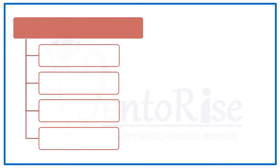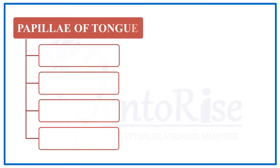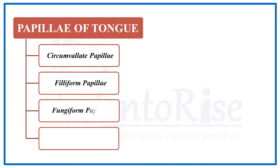The papillae on the surface of the tongue are 4 in number. These are the circumvallate papilla, the filiform papilla, the fungiform papilla, and the foliate papilla.